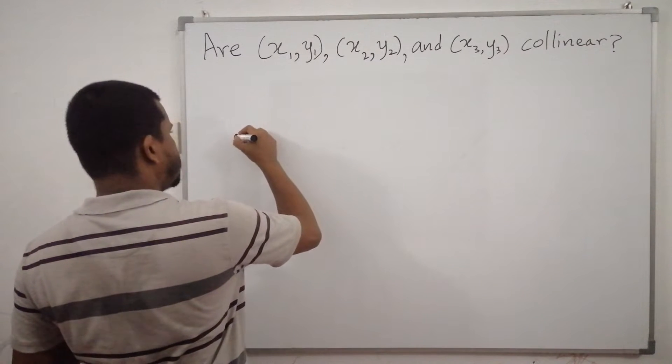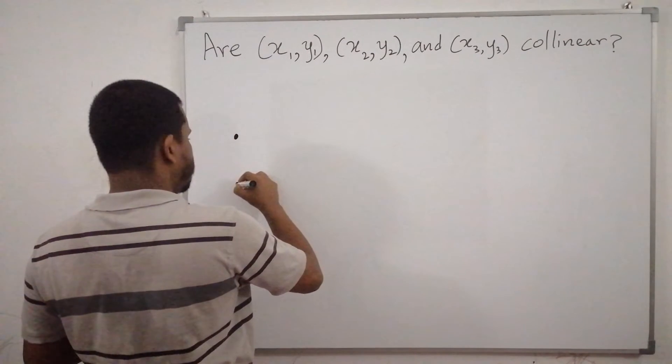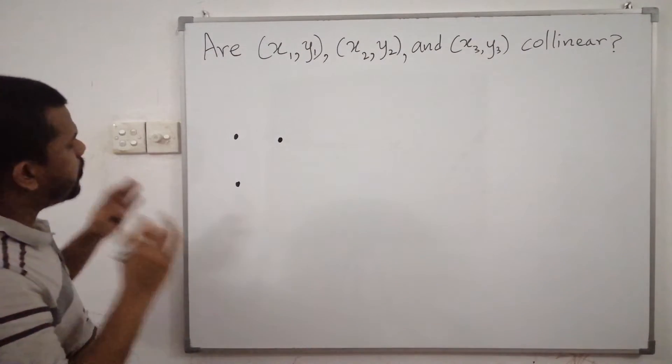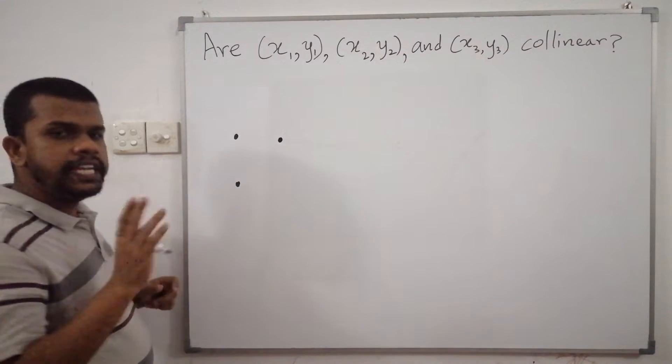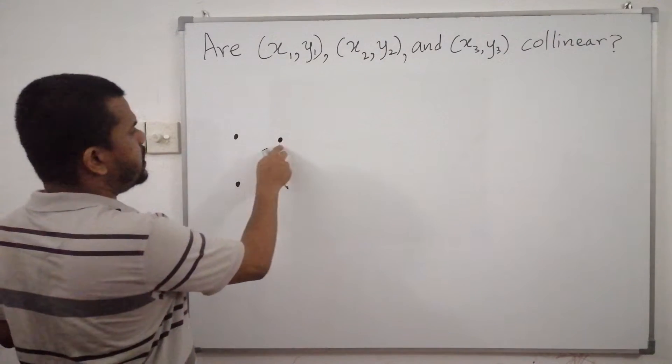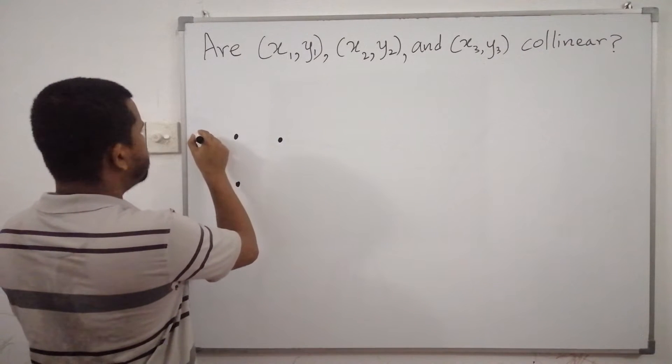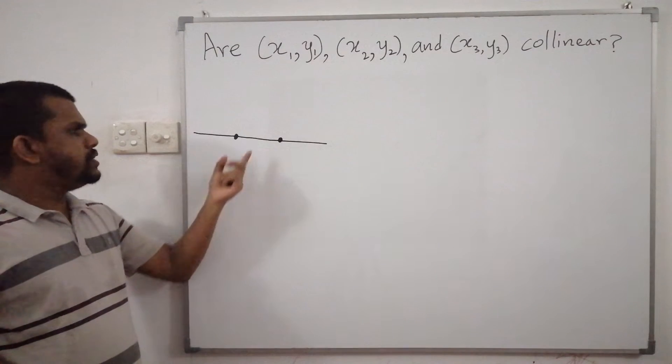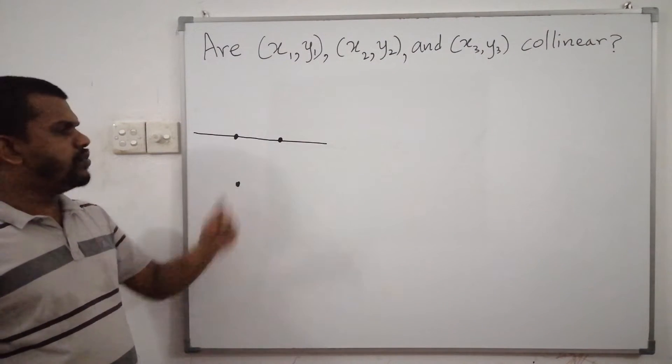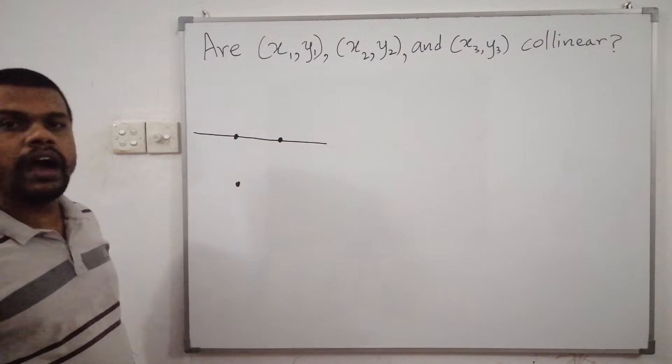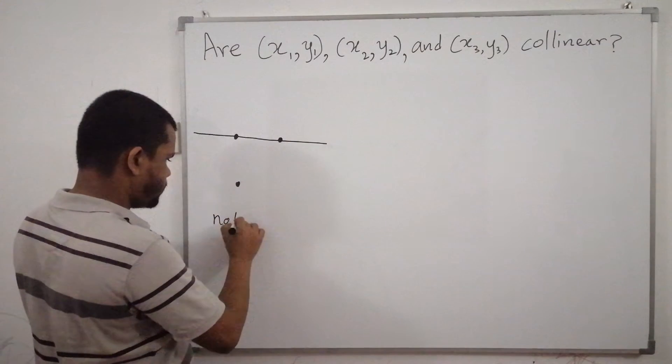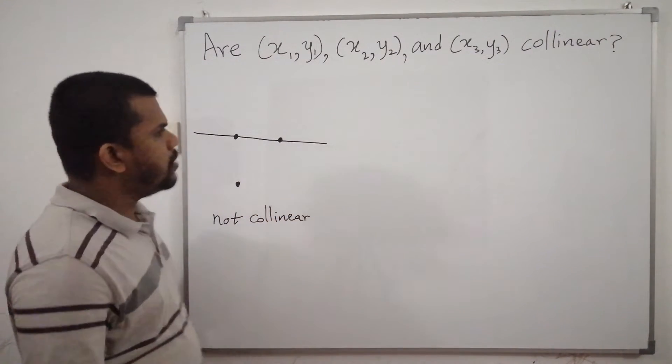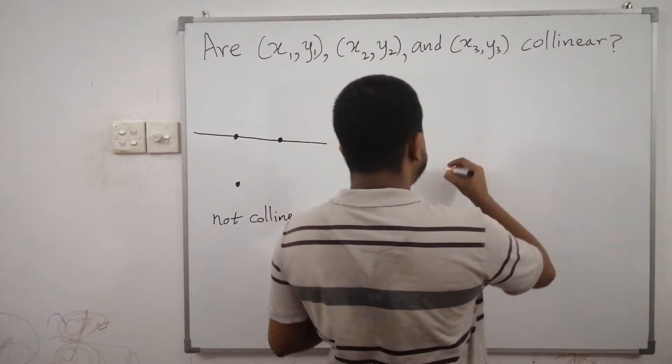So if we consider for an example these three points, now if we draw a straight line through any two points, let's say this one and this one, we draw a straight line, then the other point is not on this line. Therefore we say that these three points are not collinear.